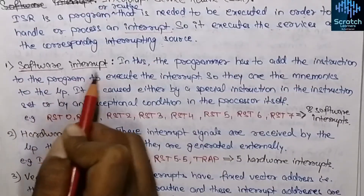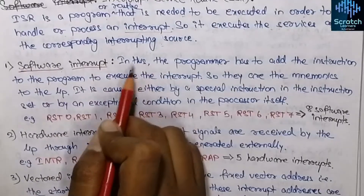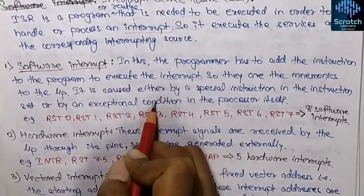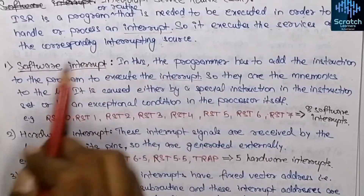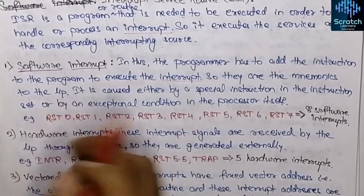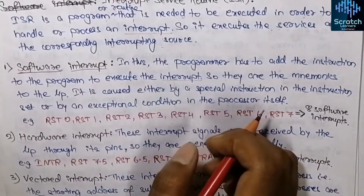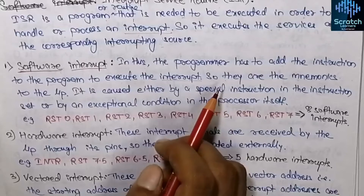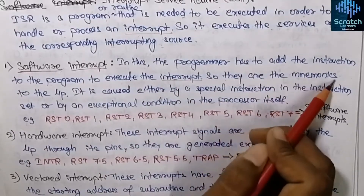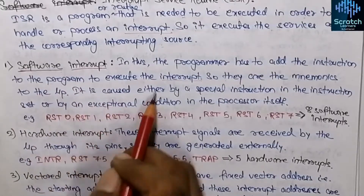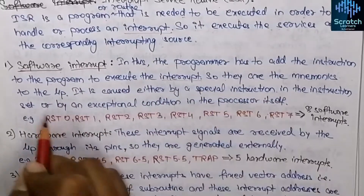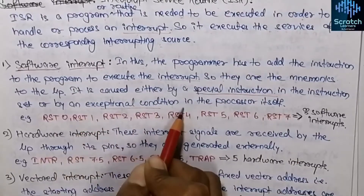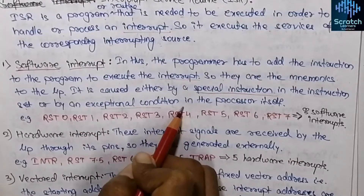The first classification is software interrupts. In software interrupts, the programmer has to add the instruction to the program to execute the interrupt. The programmer adds the interrupt instruction — that is, the mnemonics — to the program. As we know, the microprocessor works in assembly language, so mnemonics are used. A software interrupt is caused either by a special instruction in the instruction set or by an exceptional condition in the processor itself.